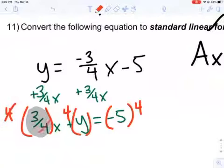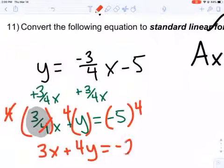Watch what happens. These 4s cancel out. I get 3x, 4 times y gives me 4y, negative 5 times 4 gives me negative 20.